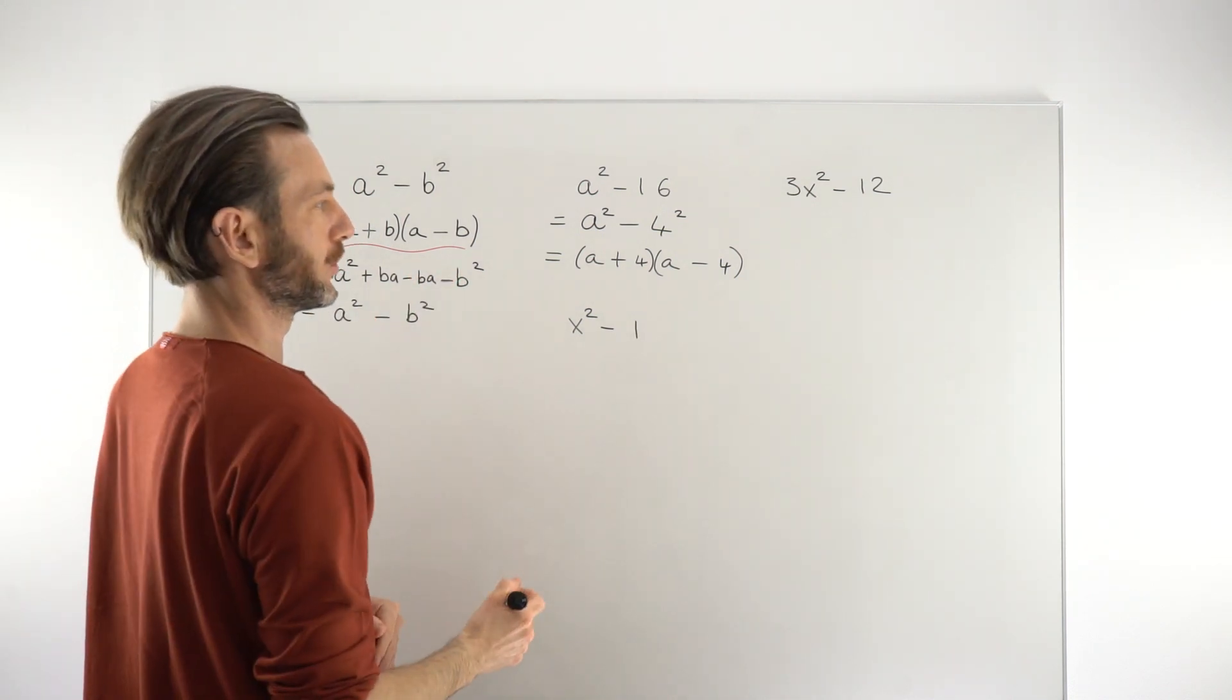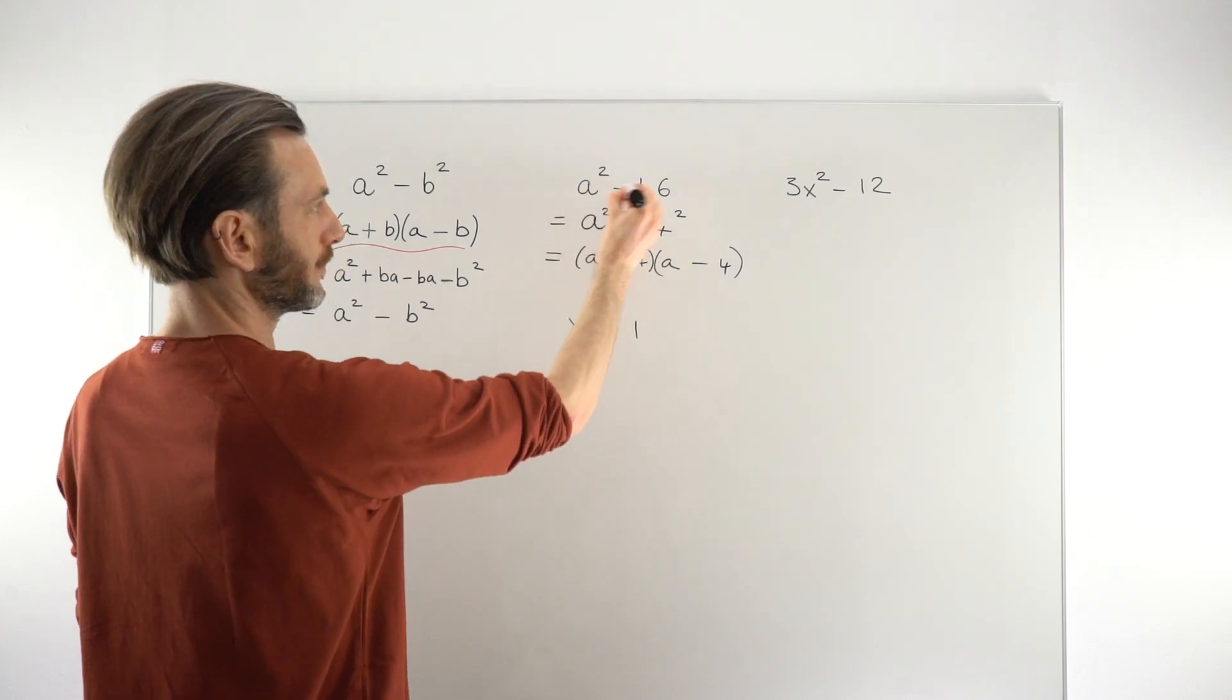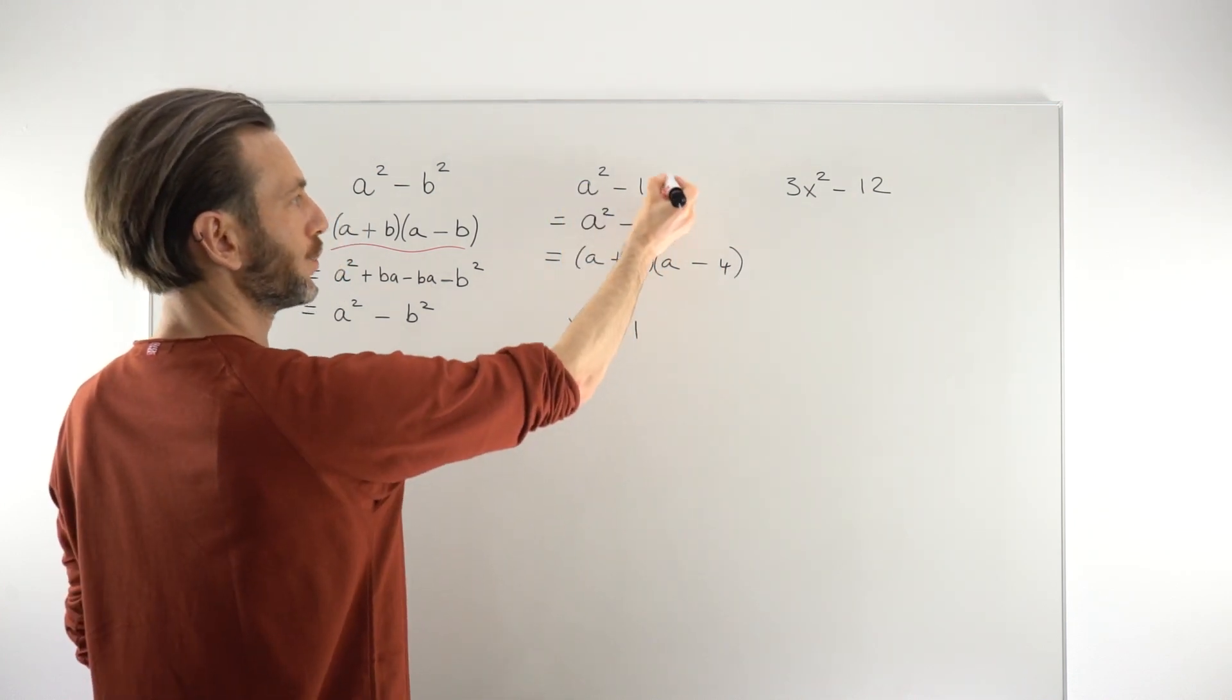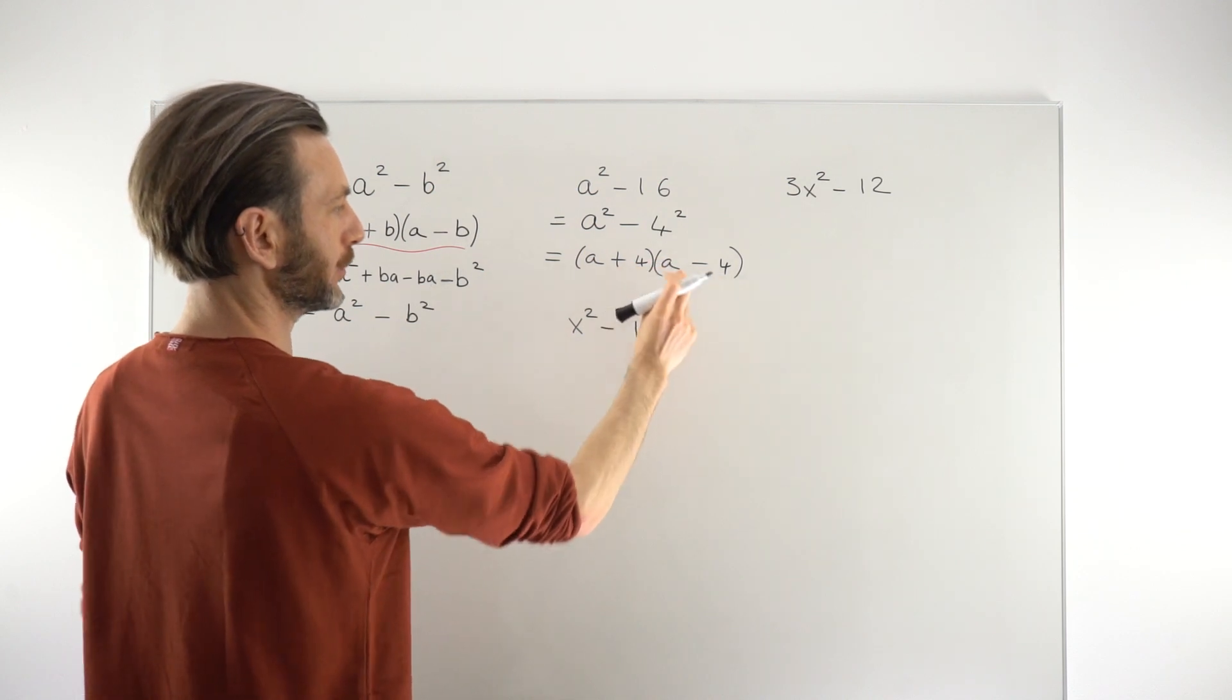That's the kind of thought process you'll need to go through. Usually you'll just go straight from that line to that line because you know that it has to be the square root of that number that goes in your bracket.